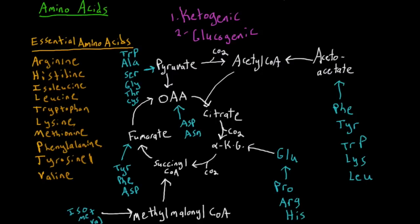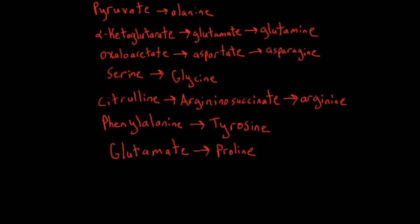So now we've talked about the essential amino acids we have to get from our diet, and the different ways we can metabolize amino acids to get energy or create them. But there's also a means of interconverting from one amino acid to another. Here's a list of all the different amino acids that can be interconverted. It's hard to memorize these as just words, but some we already know — for instance, the citrulline to argininosuccinate to arginine pathway is part of the urea cycle. Many others can be understood by looking at the structures.